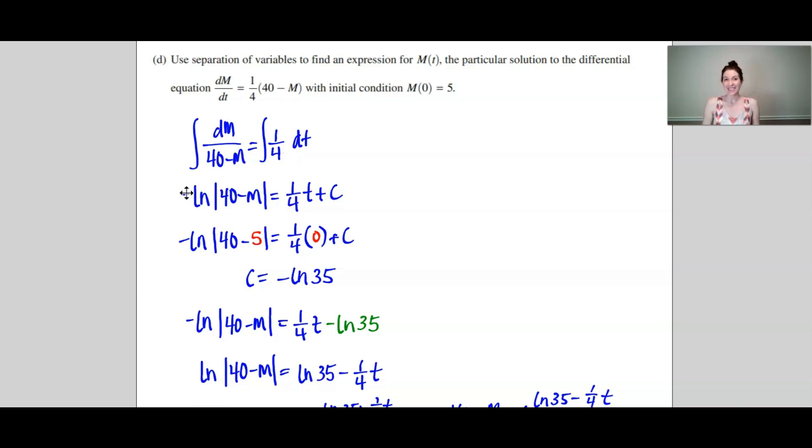Don't forget this negative sign on the left side—I'm guessing that that might be a common error that shows up. So we've got negative natural log of the absolute value of (40 minus M) equals 1/4 t plus C. I then use the initial condition that at an M value of 5, the time is 0, so I can plug that in to calculate my constant. And don't forget when you integrate to include that plus C.